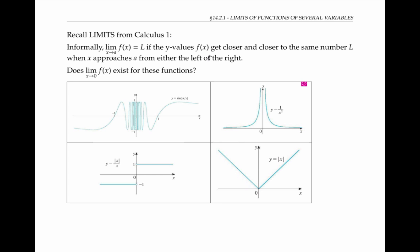Please pause the video for a moment and decide if the limit exists as x goes to zero for each of these four functions. The limit does not exist for the first function, because there's no single number that the y values settle to; instead, they wildly oscillate between all numbers between one and negative one as x goes to zero.